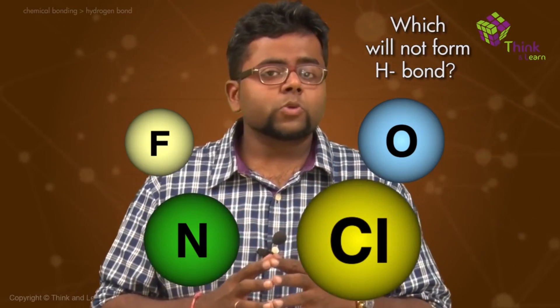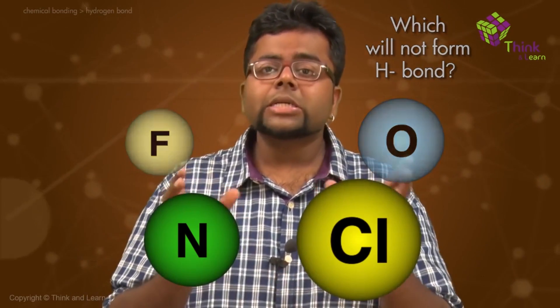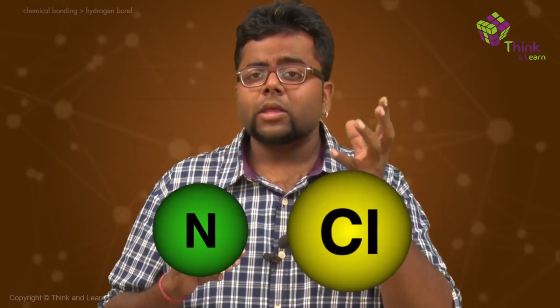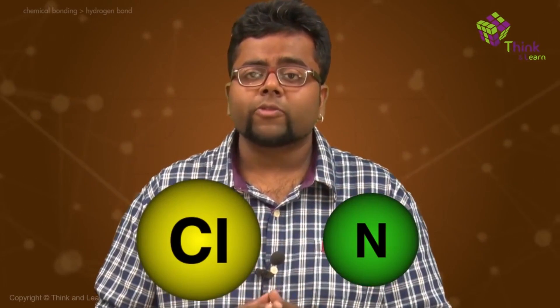Some of you must have chosen the answer as chlorine and others would have taken nitrogen, because these are the two most likely possibilities. Now, if you remember that the electronegativities of nitrogen and chlorine are almost the same. But still, there is a difference as to which one will make hydrogen bonding, and that difference arises from the second factor — the small size of the atom.